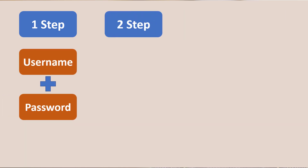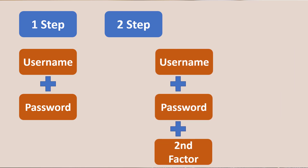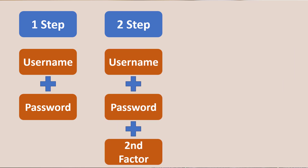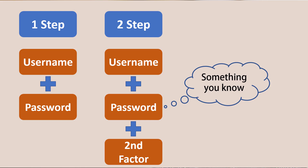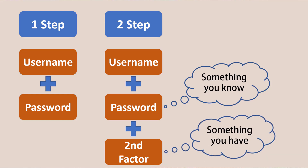Two-step verification adds something you have in your possession. Combining something you know — your password — with something you have, like a text code sent to your smartphone, can prevent your accounts from being taken over by thieves, even when they have your password.